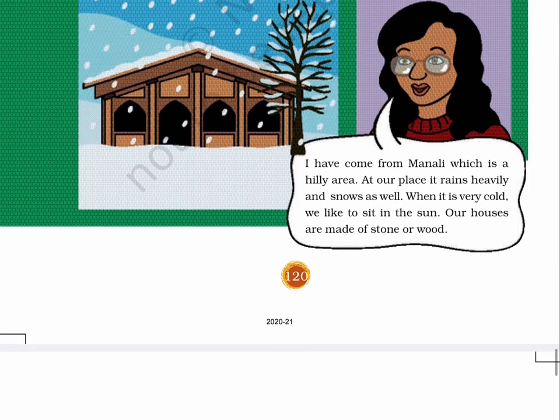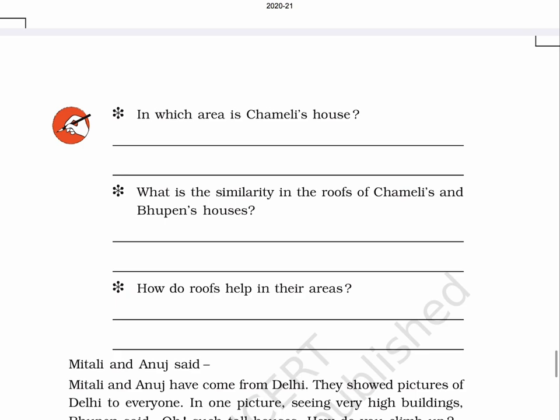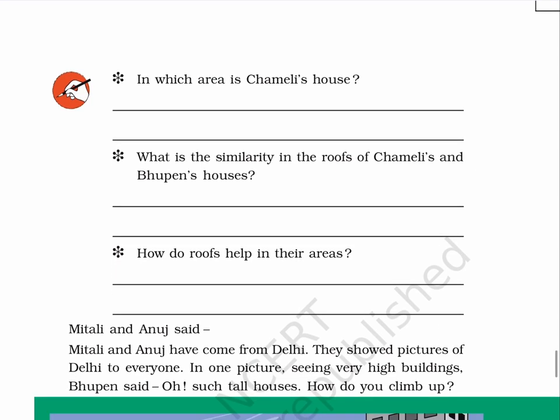Page No. 121. Questions: A. In which area is Chameli's house? Write your answer in the blank space given here. B. What is the similarity in the roofs of Chameli's and Bhupen's houses? Write your answer in the space provided here. C. How do roofs help in their areas? Write your answer in the blank space given here.